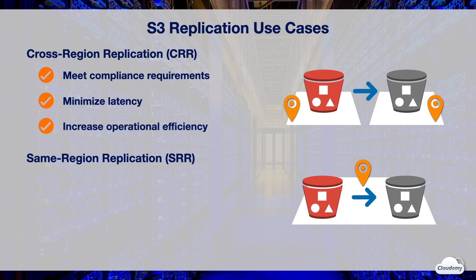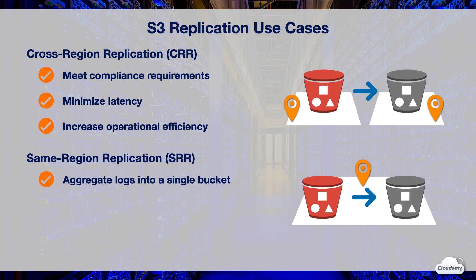You can increase operational efficiency using cross-region replication. If you have compute clusters in two different AWS regions that analyze the same set of objects, you might choose to maintain object copies in those regions. If you store logs in multiple buckets or across multiple accounts, you can easily replicate logs into a single bucket using same-region replication, which simplifies log processing in a single location.